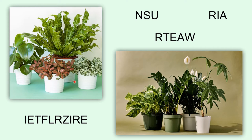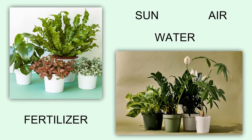Before we proceed to our lesson, try to look at these pictures and arrange these four jumbled words. Try to analyze what the pictures tell us. So we come up with these words: sun, air, water, and fertilizer. This picture explains how plants live. They have to complete their life cycle, and to maintain this healthy growth, we have to supply them with air, water, and sun. Some essential elements to plant growth are the fertilizer.